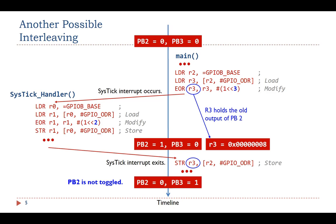After the interrupt handler completes, the main function resumes execution. When the main function executes the store instruction, the old output of PB2 is mistakenly written to the ODR register. As a result, the output of PB2 is changed back to 0. At the end, the output of PB2 fails to be toggled.